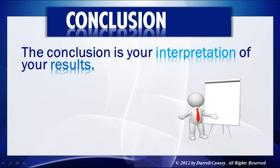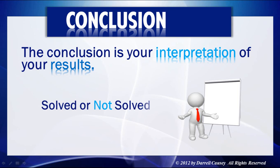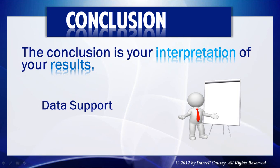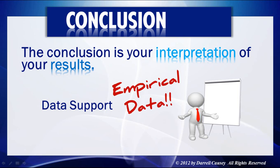The conclusion is your interpretation of the results. Remember, when anyone comes up with a conclusion, it's their interpretation — it could be right or it could be wrong. You should state the problem in your conclusion, tell whether it was solved or not, and have data to support your ideas. Nobody should accept your ideas without data support — without that empirical evidence from the laboratory.